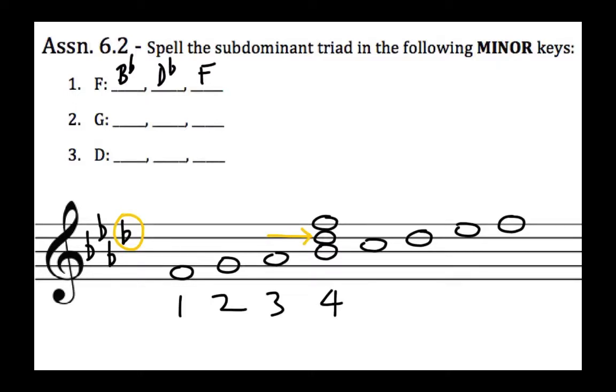However, in the book they ask you for the major subdominant triad, which I don't want you to spell. If this was to be melodic minor, the sixth scale degree and the seventh scale degree are raised. So there would be a natural sign here on the sixth scale degree, and this D natural would be canceling out that D♭.